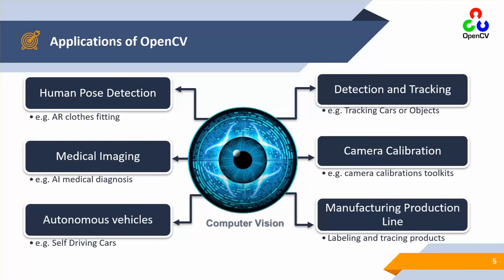We also have autonomous vehicles and self-driving cars, which are state-of-the-art applications these days. These are quite common in Audi cars and NVIDIA platforms, among other major companies in the autonomous vehicles domain. These self-driving cars make use of cameras, and the code for those cameras can be written using the OpenCV library.